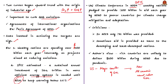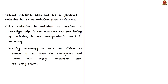Countries pledged to provide $100 billion in aid each year by 2020 to poorer countries for climate change mitigation and adaptation. However, in 2017 only $71 billion was provided. The author believes rich countries are unlikely to deliver the $100 billion target, especially in 2020, as the world is crippled by the COVID-19 pandemic. The pandemic has brought industrial activities to a standstill, which has led to a reduction in carbon emissions — but for this to continue post-COVID-19, a structural shift in society is required.